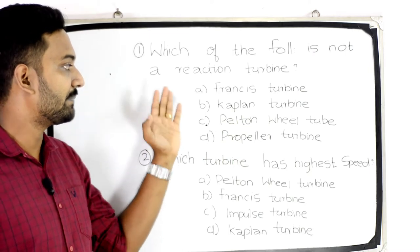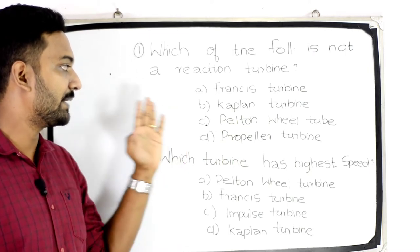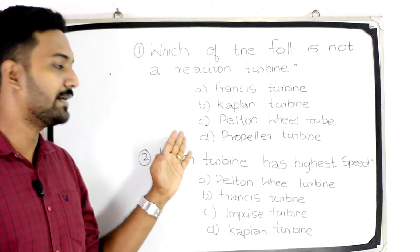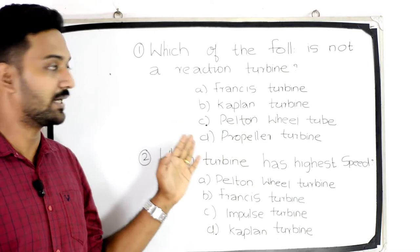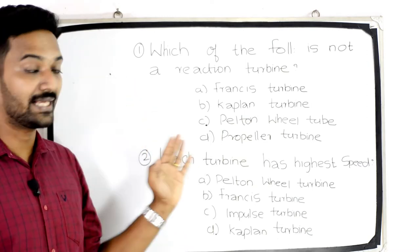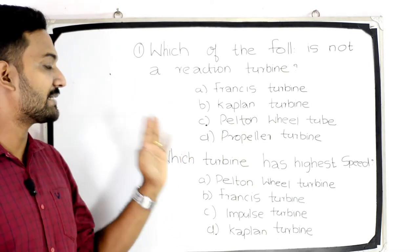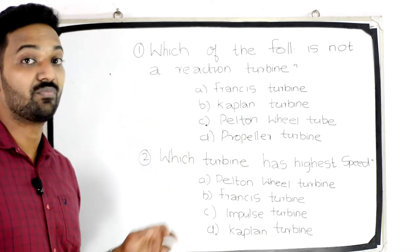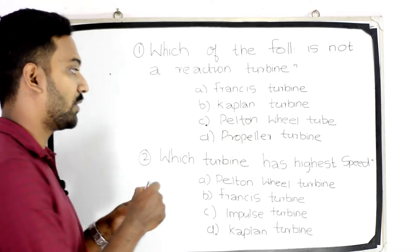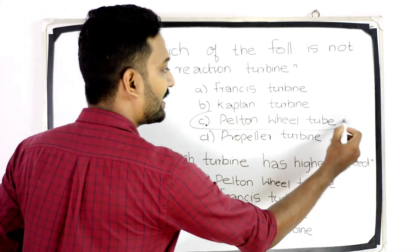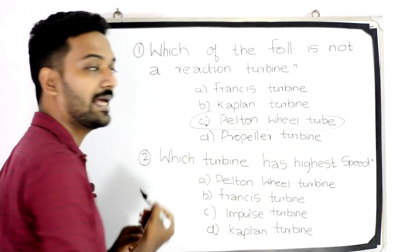Options: Francis turbine, Kaplan turbine, Pelton wheel, and propeller turbine. The answer is Pelton wheel — Option C.